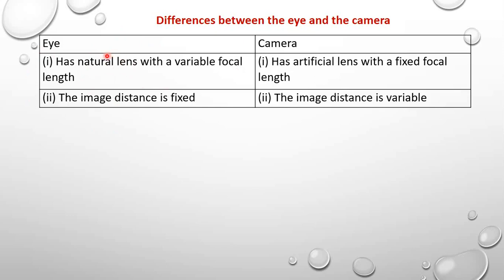The eye has other parts — what we call the ciliary muscles. For those who do biology, this is well known, because the human eye is also covered in biology. The ciliary muscles contract and relax, helping to vary the thickness of the lens. As the thickness of the lens varies, the focal length of that lens also varies. But for the camera, the lens is artificial, and so it always has a fixed focal length.